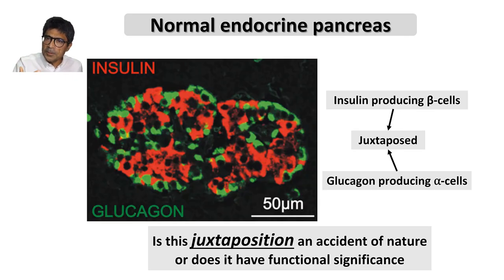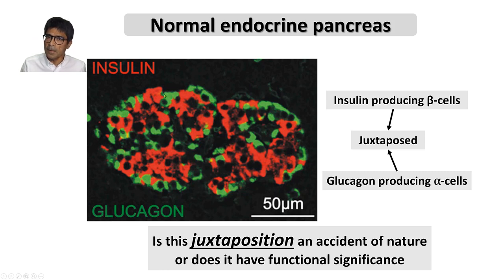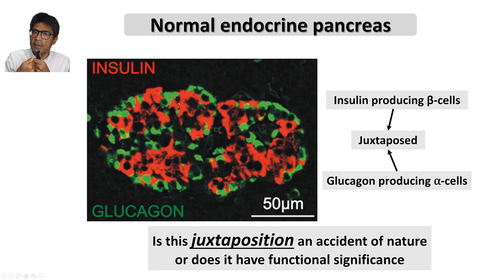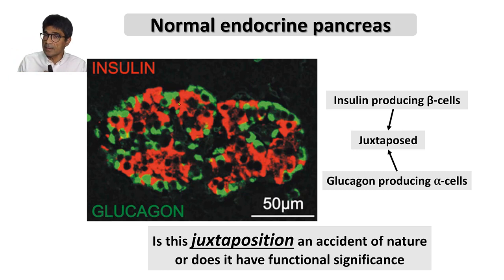This is an image of the pancreas — the insulin-producing cells in red and the glucagon-producing cells in green. They are juxtaposed to each other, right next to each other. I want to explore with you: is this juxtaposition an accident of nature, or does it have a specific functional significance?